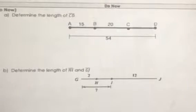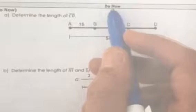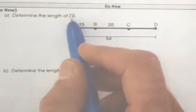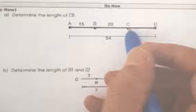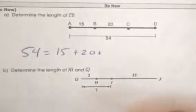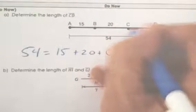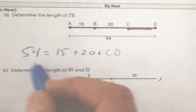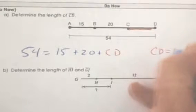Students will be able to use segment addition to solve for lengths. Determine the length of segment CD. We see AB is 15, BC is 20, and this entire amount is 54. So 54 equals 15 plus 20 plus segment CD. This amount is 35. To isolate CD, we subtract 35 from both sides. 54 minus 35 equals 19. CD equals 19 units.